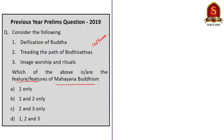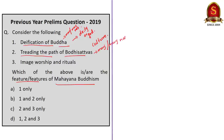But let us say you do not know anything about Mahayana Buddhism — how should you approach this question? It is not very difficult. The first statement says that deification of Buddha is one of the features of Mahayana Buddhism. Deification is the process of making someone or something a deity or God. So this statement says that Mahayana Buddhism makes Buddha as God. Now the second statement says treading the path of Bodhisattvas, meaning following the path of Bodhisattvas. The third statement says image worship and rituals are features of Mahayana Buddhism.